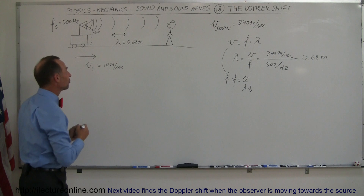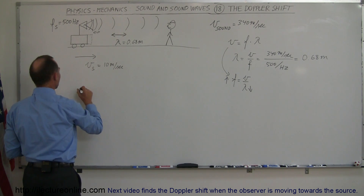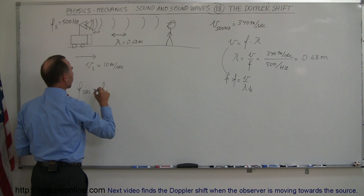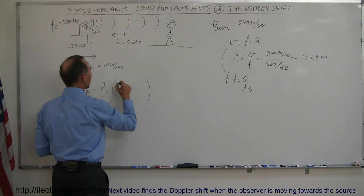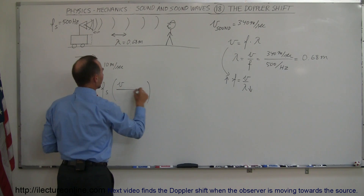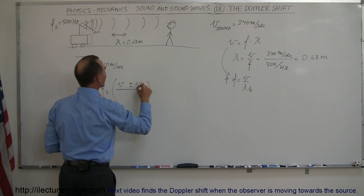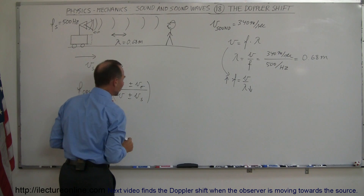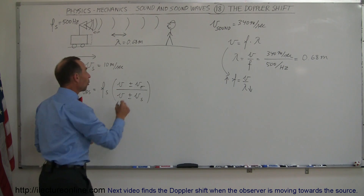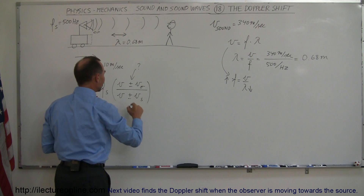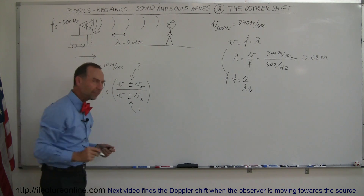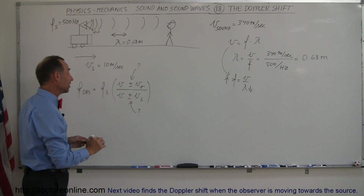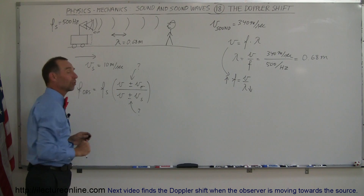The equation we use is fairly straightforward. The frequency observed equals the frequency of the source times: the velocity of sound plus or minus the velocity of the observer, divided by the velocity of sound plus or minus the velocity of the source. The whole question is always what is the plus or minus for each. Some books put out an equation for each case, but it's easier to use one equation and determine the plus or minus.